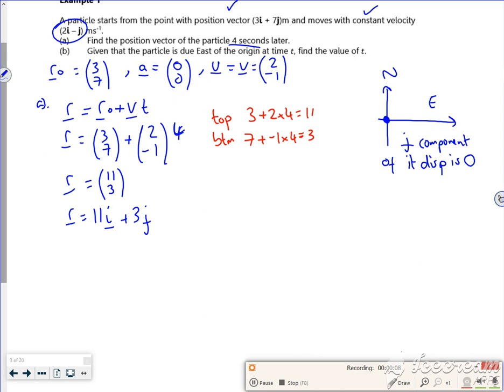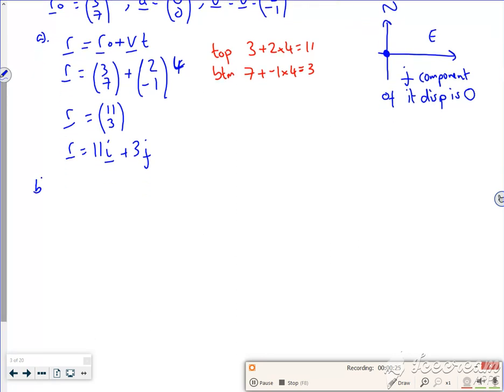we've got this idea that if it's due east of the origin and the J component is zero, now it wants to find a value of T but I need an equation first in terms of T to solve. So I'm gonna need an equation in terms of T.